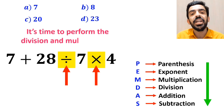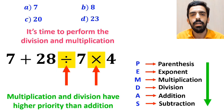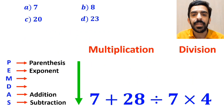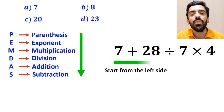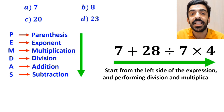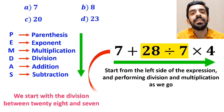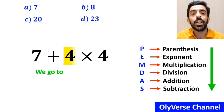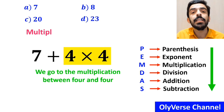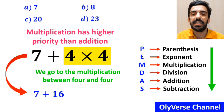Now it's time to perform the division and multiplication, because they have higher priority than addition. We must pay close attention that multiplication and division have equal precedence. In this case, we start from the left side of the expression. So we start with the division between 28 and 7, giving us 7 plus 4 multiplied by 4. Then we perform the multiplication between 4 and 4, giving 7 plus 16, which ultimately gives us the answer 23.